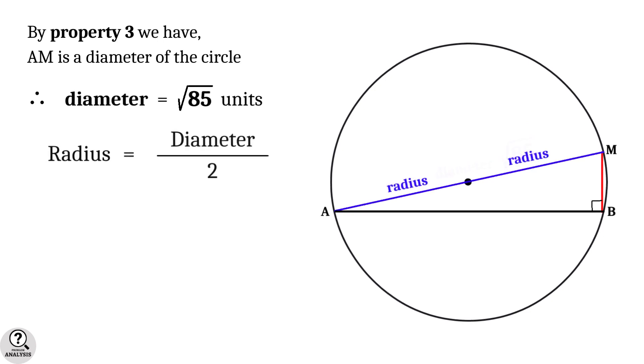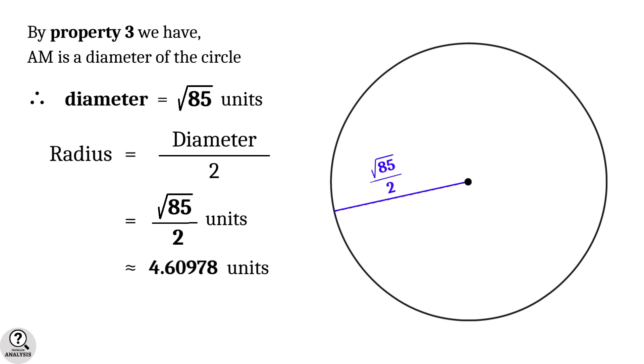That is, radius of the circle equals half of diameter, which is equal to root 85 by 2 units. This value is approximately equal to 4.60978 units, and that is the solution we are looking for.